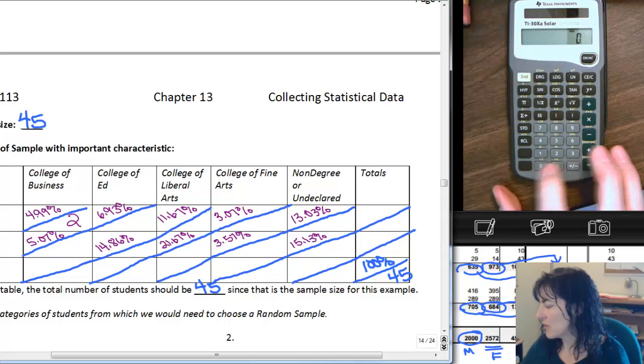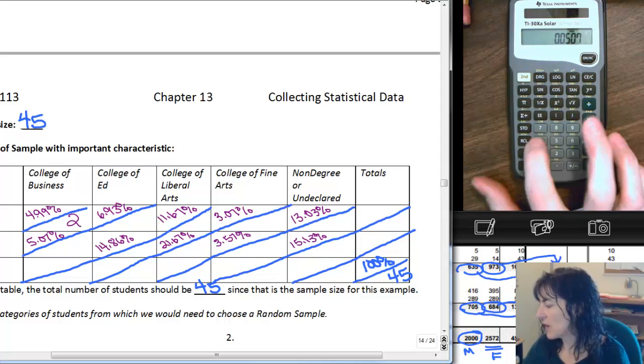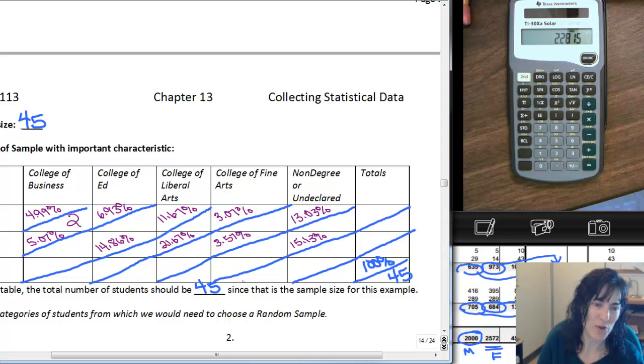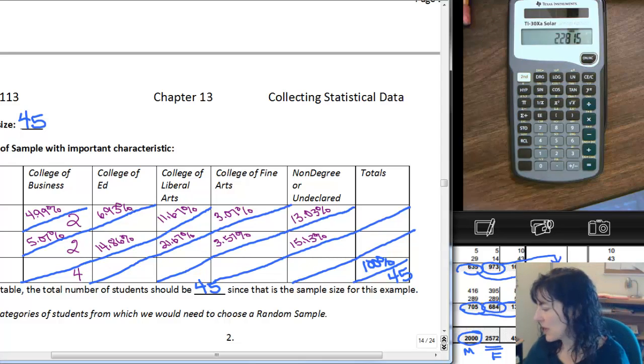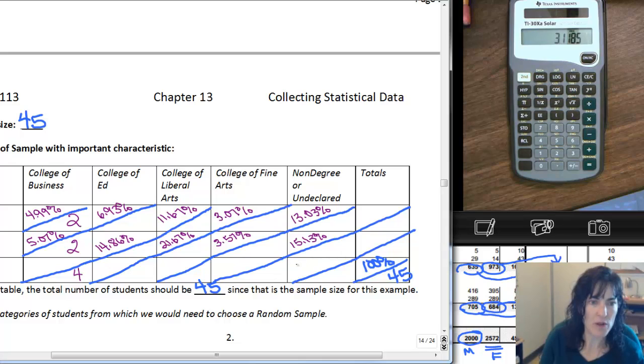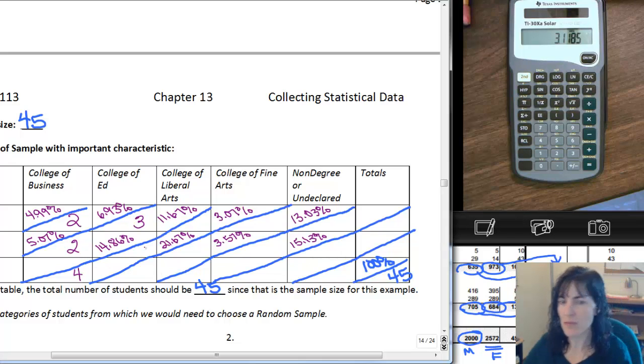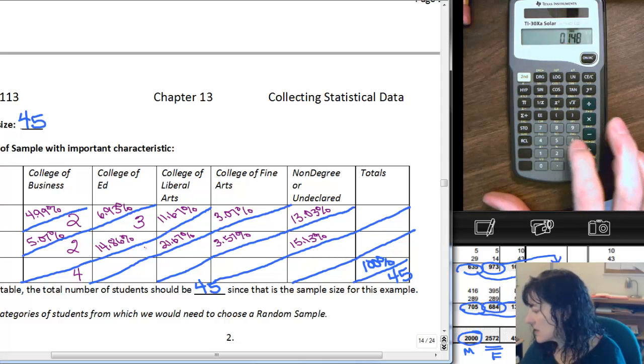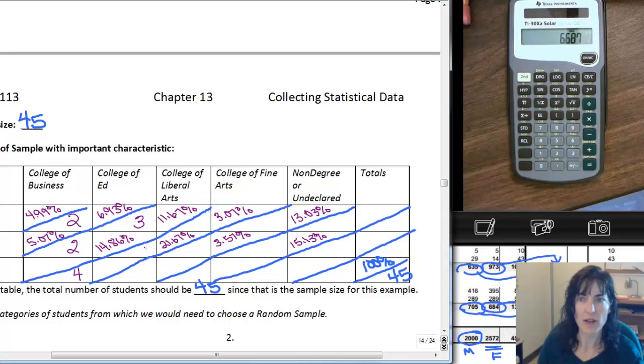Then 5.07%, so 0.0507 times 45 gives me 2.2 again, or 2 people. Adding those two gives me a total of 4 people from the College of Business. For 6.93%, 0.0693 times 45 equals 3.1, so 3 College of Business males. And 0.1486 times 45 is 6.6, so 7 College of Business females for a total of 10 College of Business people.